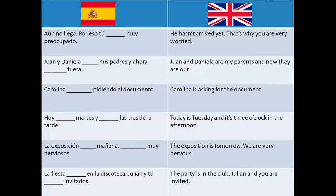Now let's see the exercises. As I said before, we need to practice a lot to learn the differences between ser and estar in the spoken language. Remember that we must choose between the verb ser and estar in any of their conjugations in the present simple from the indicative mode. Exercise: 'Aún no llega. Por eso tú, muy preocupado' — He hasn't arrived yet, that's why you are very worried. We use the verb estar because this is a temporary situation expressing the mood of the other person.